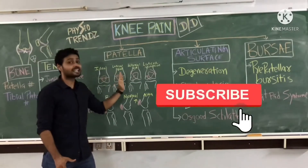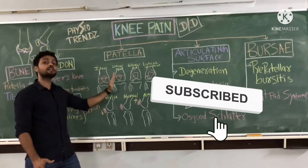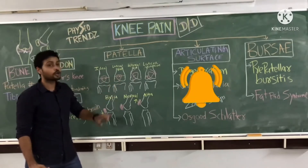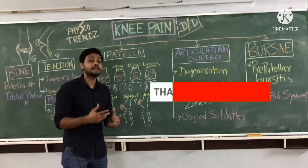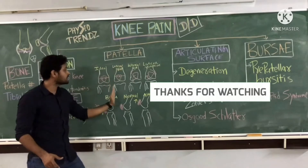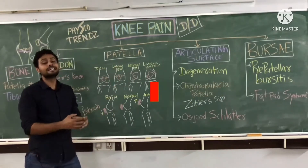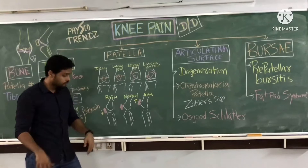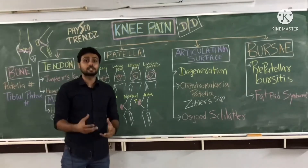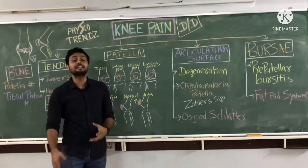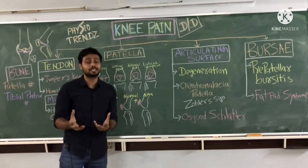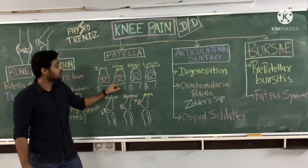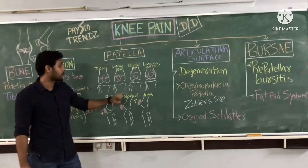If the patella is gliding towards the lateral direction more, it can cause knee pain for the patient, because more forces are generated towards the lateral direction. This can occur because of weakness in the medialis muscles or tightness in the lateralis muscles. We need to identify that and correct it if lateral gliding of the patella is happening.